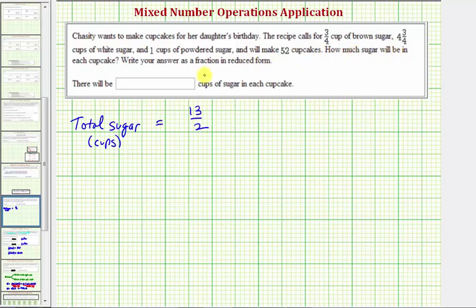We want to know how much sugar is in each cupcake. To do this, we'll take the total amount of sugar here, and cut or partition the sugar into fifty-two equal pieces. So the amount of sugar in cups per cupcake is equal to thirteen-halves divided by fifty-two.